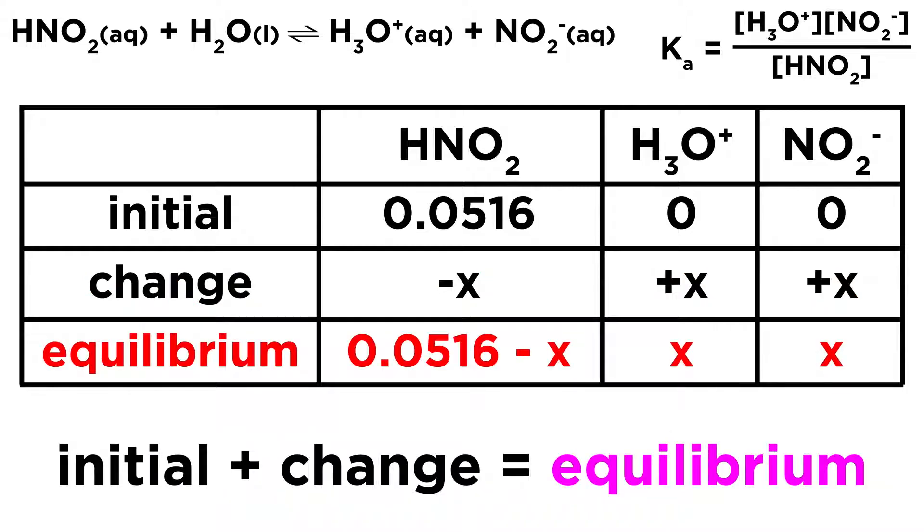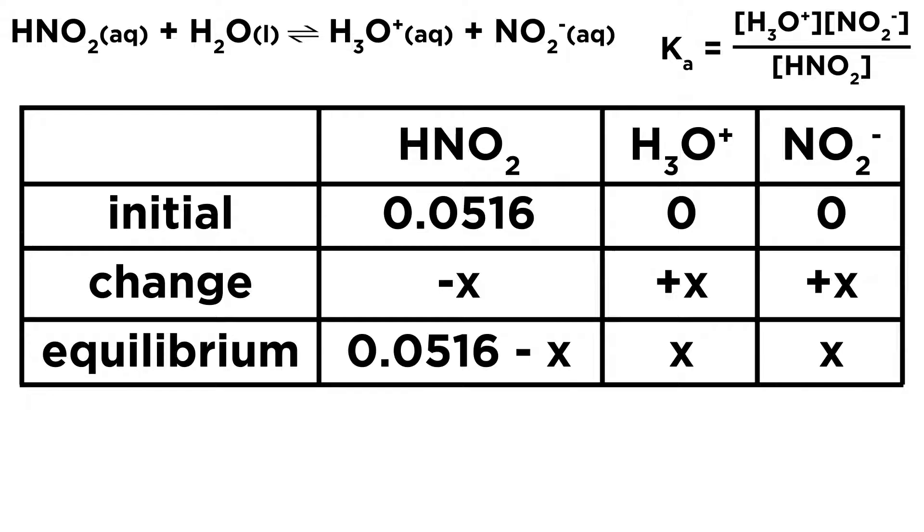Then lastly, for the equilibrium values, we just take the initial and the change and add them together. So 0.0516 minus X, and then 0 plus X is simply X for the two products. So there is our completed icebox. So what can we do with this? Well, we do have one other piece of information.